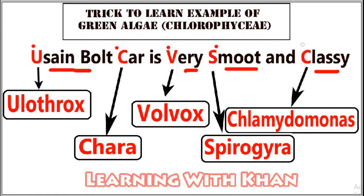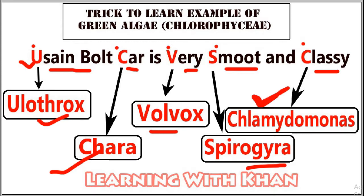Starting from the first one: U in 'Usain' stands for Ulothrix. The second one, C from 'car,' stands for Chara — very similar in pronunciation. V stands for Volvox. S stands for Spirogyra. And C stands for Chlamydomonas. These are the most important examples of green algae, or Chlorophyceae.